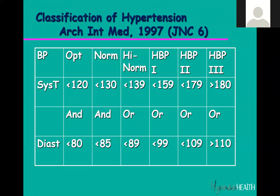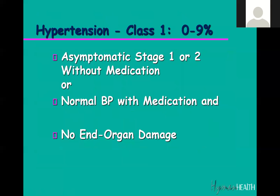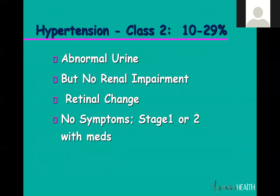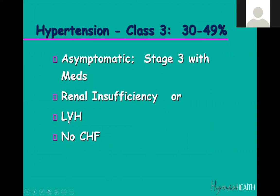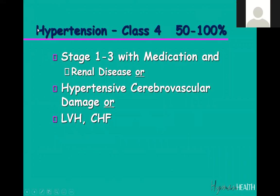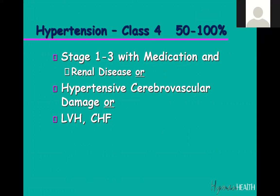When you look at high blood pressure classification: Class 1 is the most minimal, with a 0–9% impairment range. Class 2 starts showing some impacts — possibly findings in the urine or eyes. Class 3 is where you see left ventricular hypertrophy and kidney insufficiency, with multiple medications needed. Class 4 includes heart failure — CHF — which pushes someone into the highest level and requires a careful assessment.